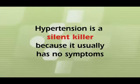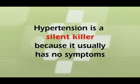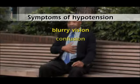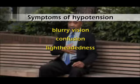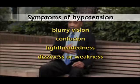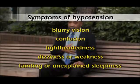High blood pressure or hypertension is called a silent killer because it usually has no symptoms. Low blood pressure or hypotension can be a sudden drop in blood pressure or blood pressure that is consistently below your normal range. Blurry vision, confusion, lightheadedness, dizziness or weakness, and fainting or unexplained sleepiness are all symptoms of hypotension.